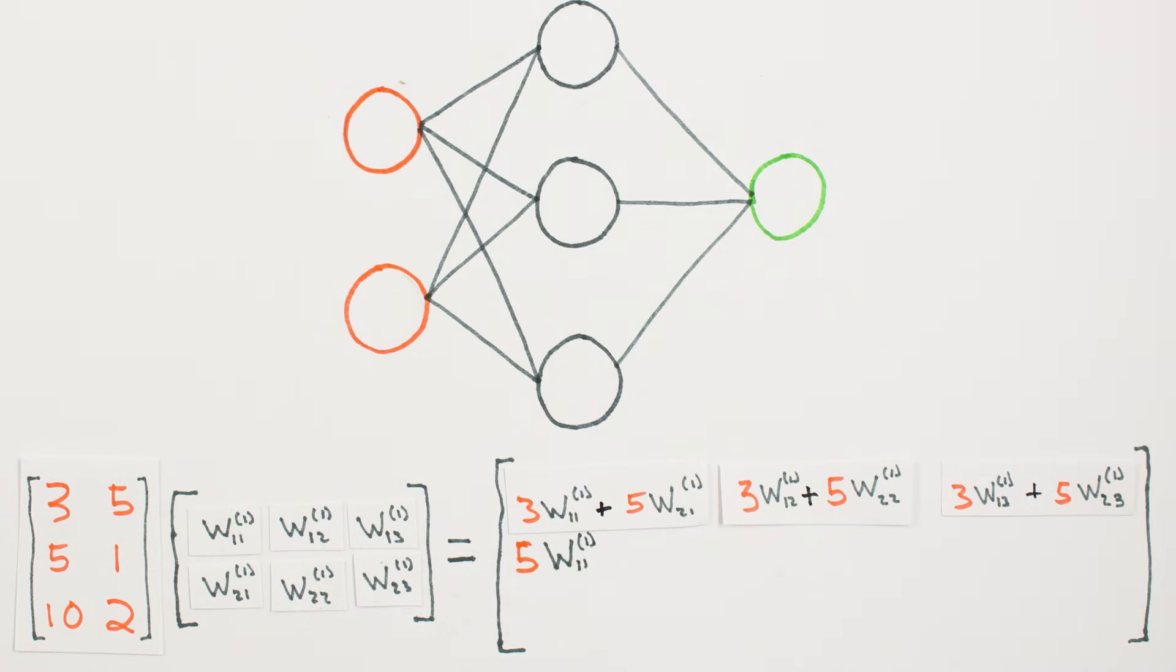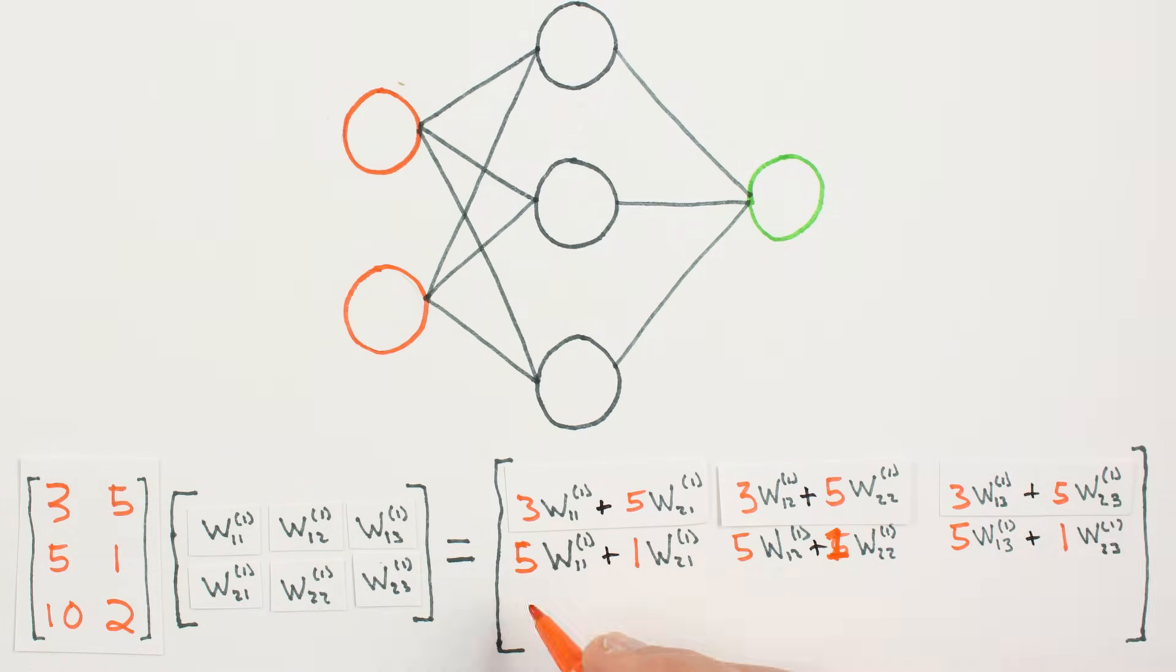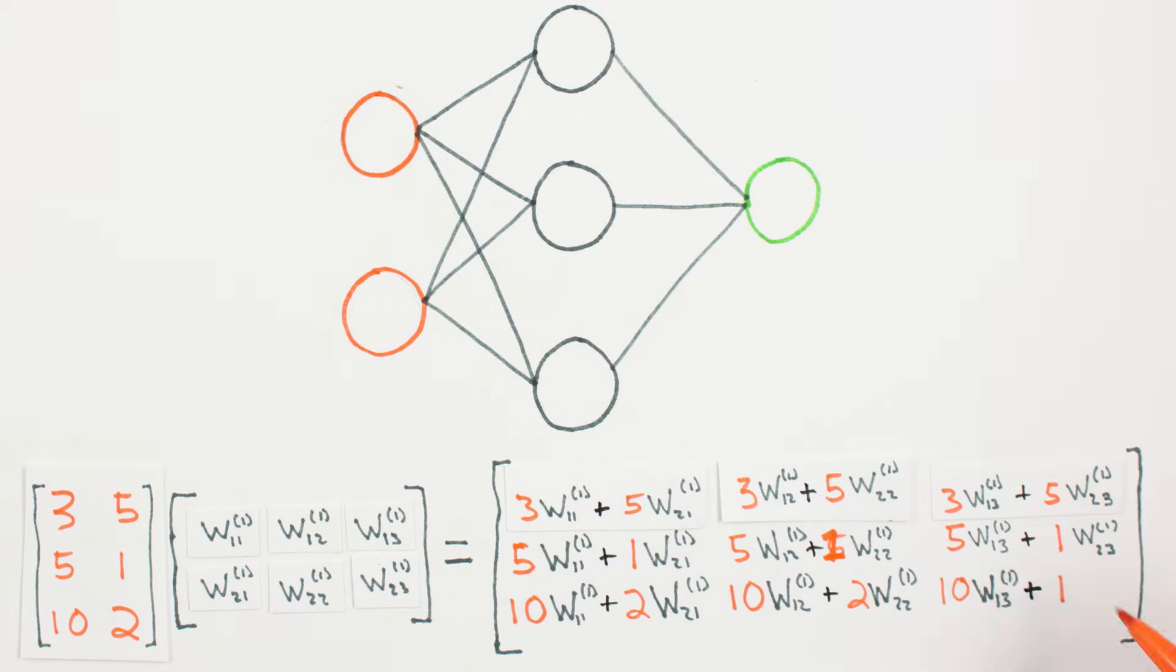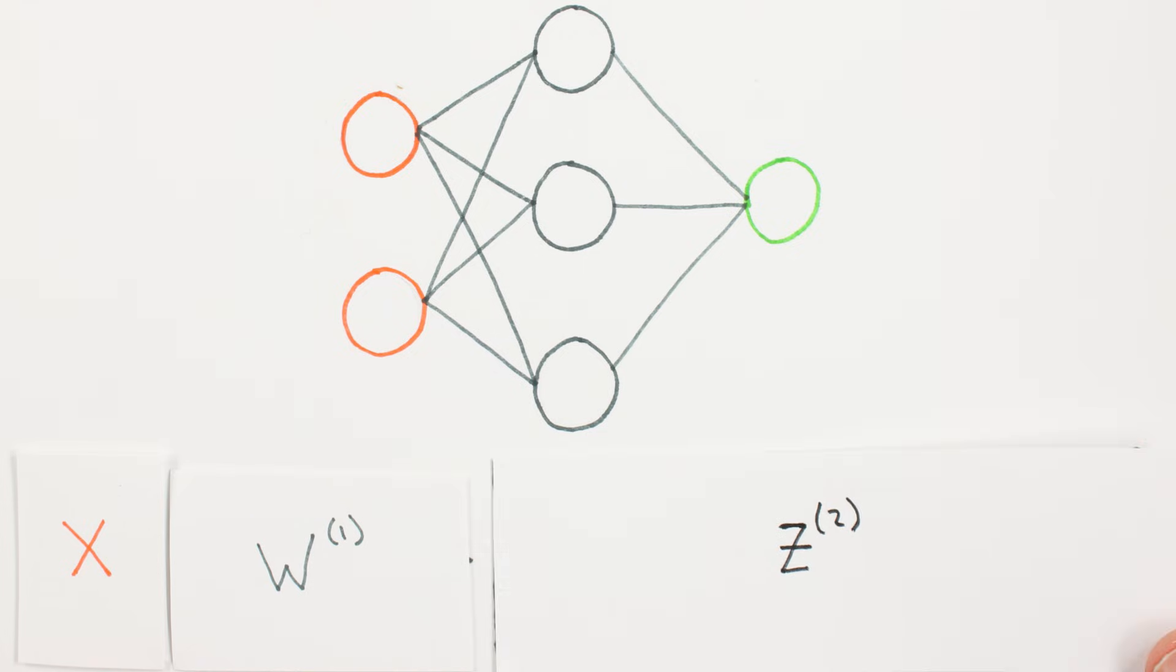Using matrix multiplication allows us to pass multiple inputs through at once by simply adding rows to the matrix X. From here on out, we'll refer to these matrices as X, W1, and Z2, where Z2 is the activity of our second layer.